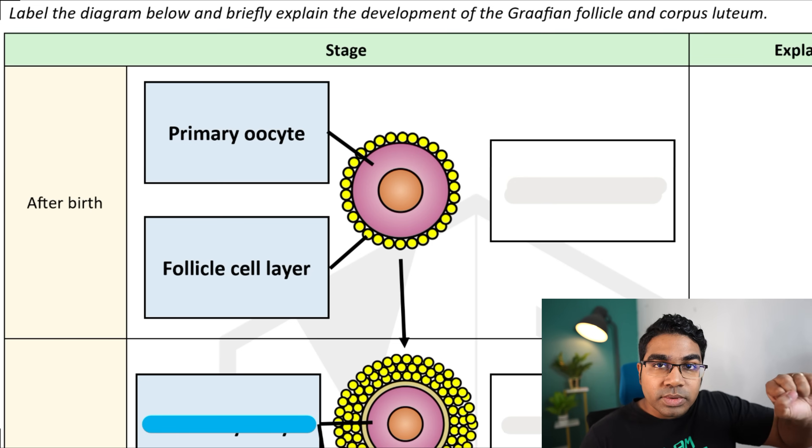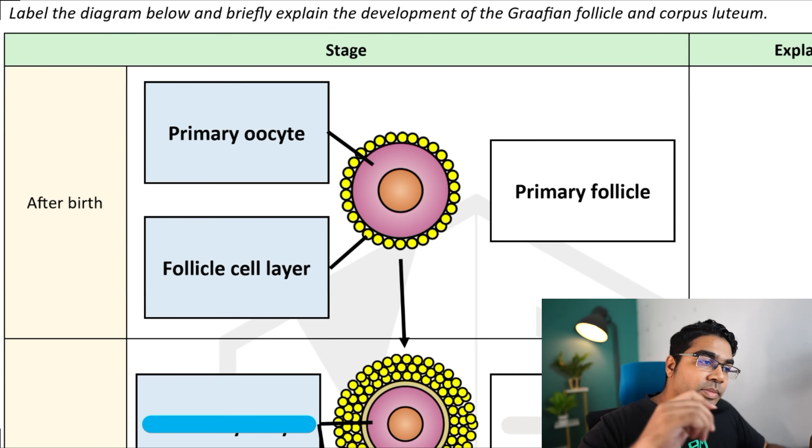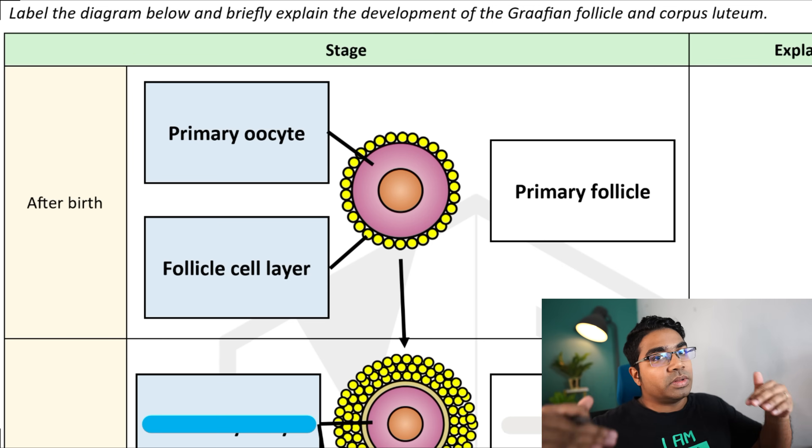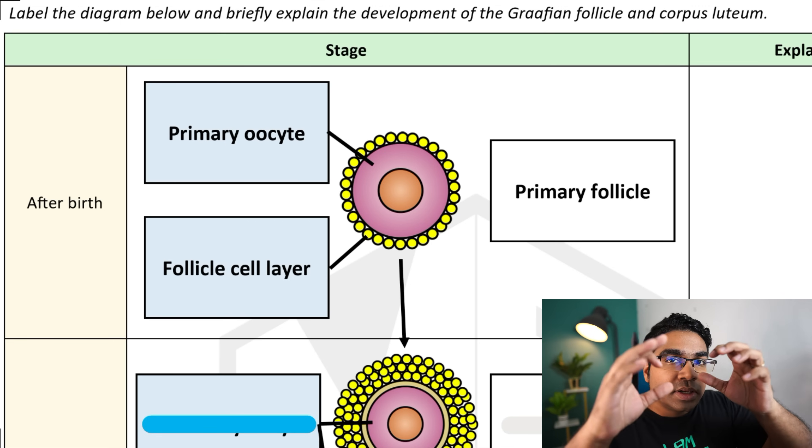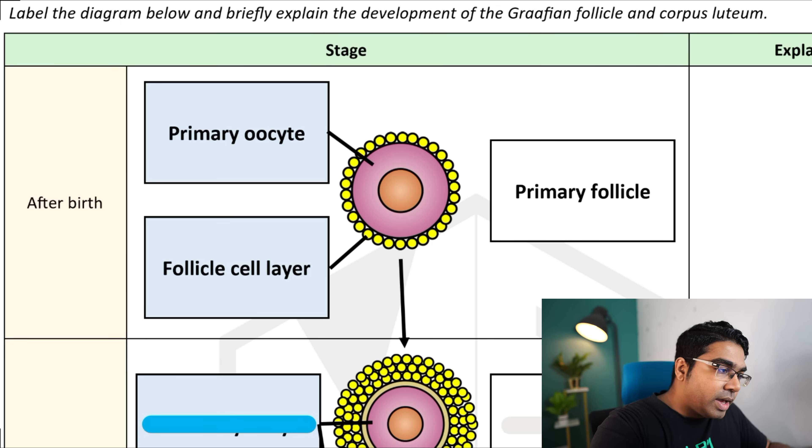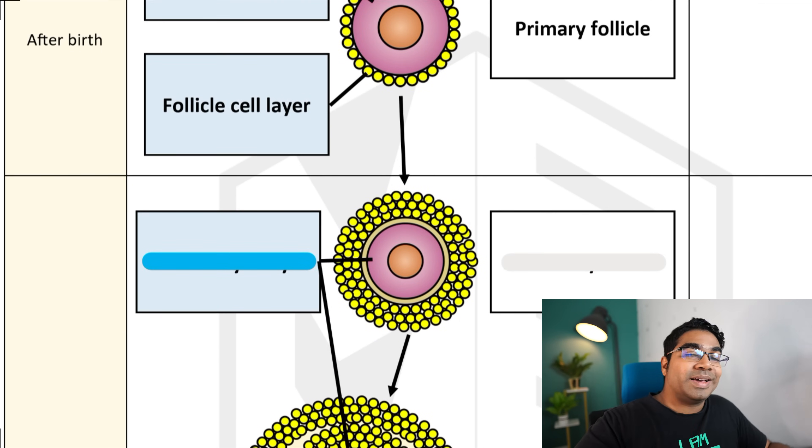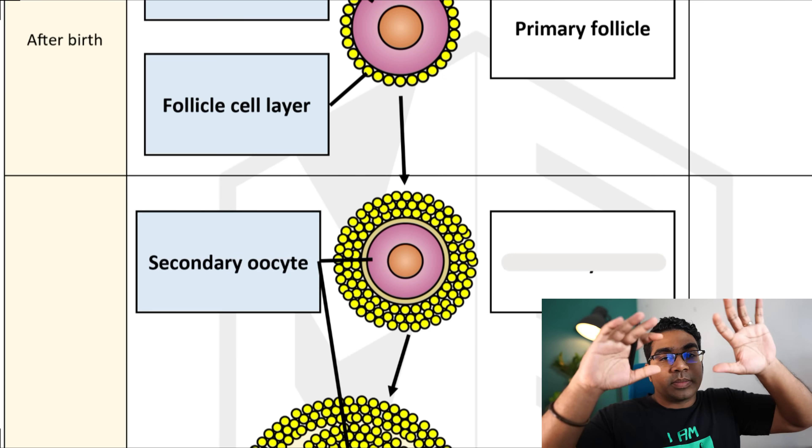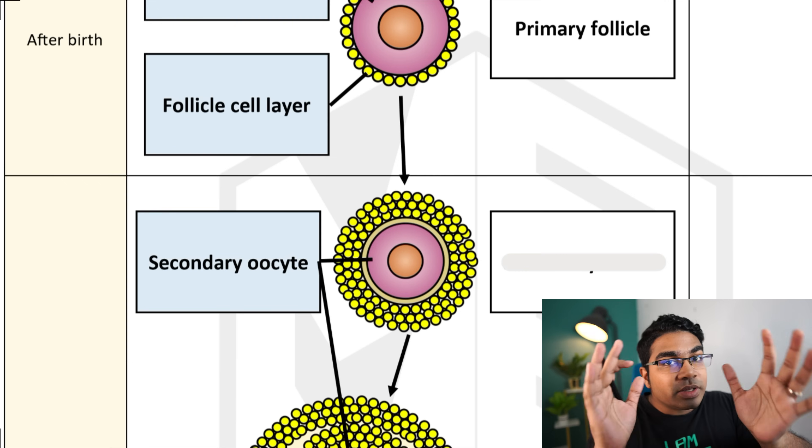At puberty, when the menstrual cycle begins, follicle-stimulating hormone is released. Follicle-stimulating hormone is going to stimulate the growth of the follicle cells. And so, from one layer of follicle cells, this is going to become more and more layers of follicle cells. When the primary oocyte becomes the secondary oocyte, as we saw earlier during the meiotic events, then we have the secondary oocyte encapsulated by a few layers of follicle cells. This combination is known as the secondary follicle.